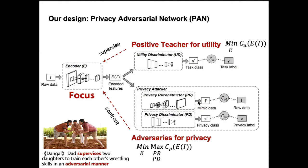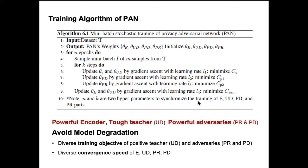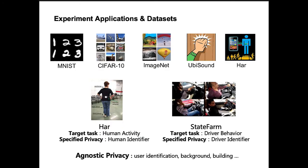We focus on the training of the encoder. It employs a positive teacher to supervise the training of the encoder to guarantee utility, and employs two adversaries to confront the training of the encoder to ensure privacy. We hope a powerful encoder comes from a tough teacher and powerful adversaries, so we present a training algorithm to avoid model degradation.